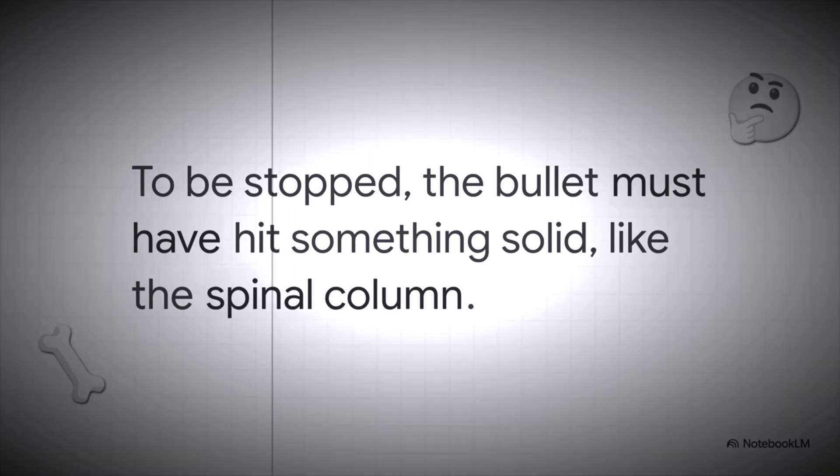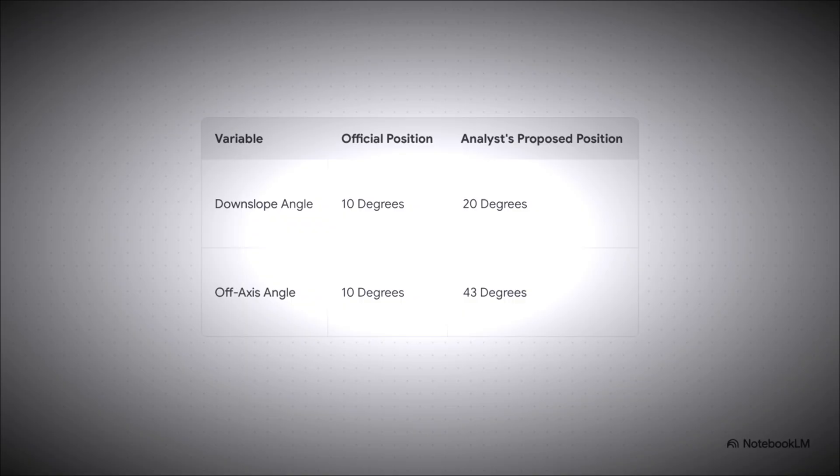But here's the big problem. The official 10-in-10 trajectory? It would miss the spine completely. It just doesn't line up. So this forces the analyst to work backwards, to calculate a completely new trajectory that would actually hit the spine. And instead of 10-in-10, the physics demand a shot that's 20 degrees down and 43 degrees off axis. We're talking a much steeper angle from much farther to the side.